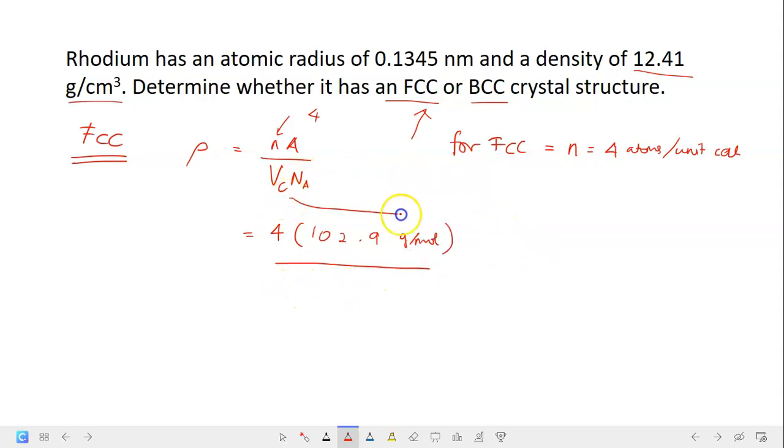In this case, Vc is the unit cell volume. The unit cell volume is A cubed. And according to what we have learned, for FCC, A equals to 2R√2.